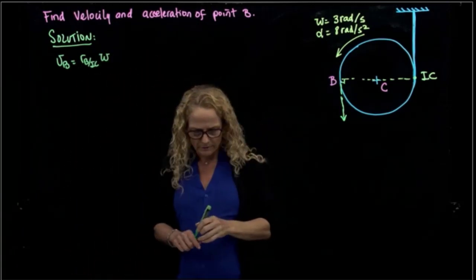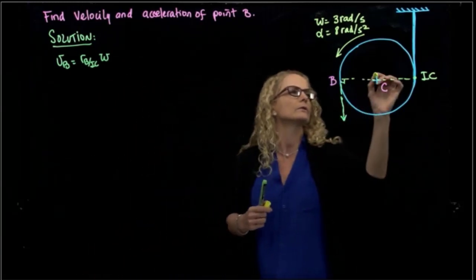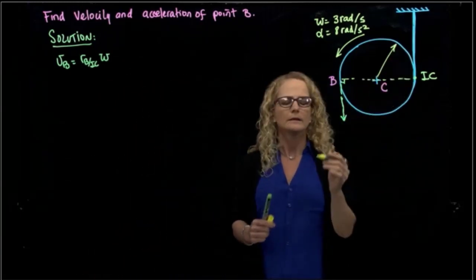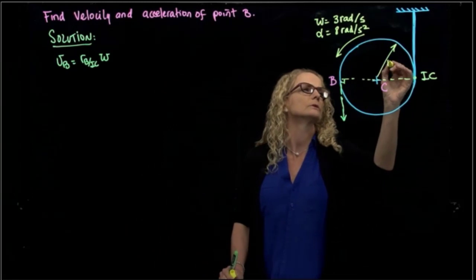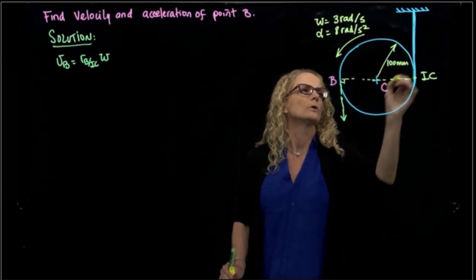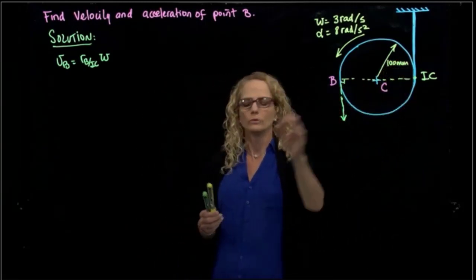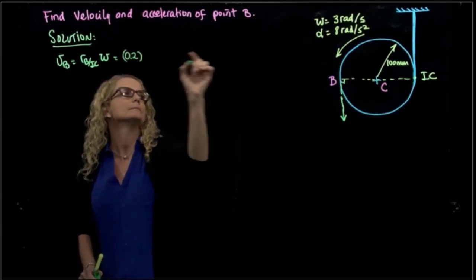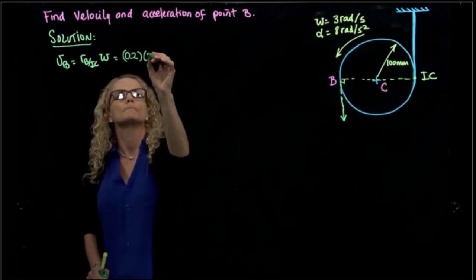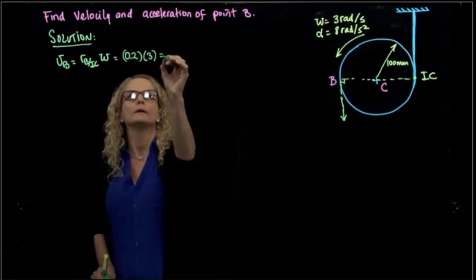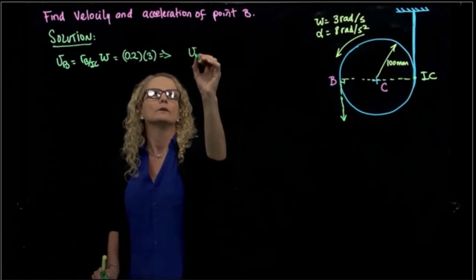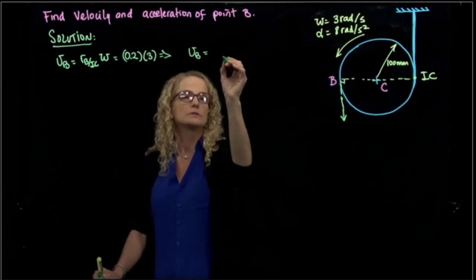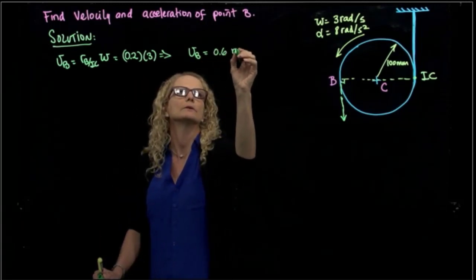And those are both given because we are given that the radius of this disc is 100 millimeters. So it's 0.2 meters times 3 radians per second. So it will give me that the velocity of B is equal to 0.6 meters per second.